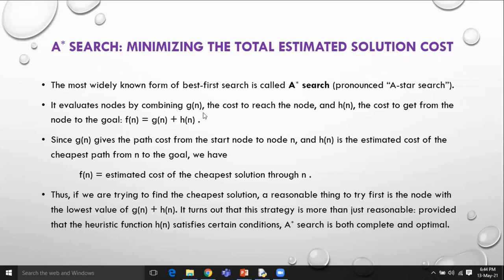It evaluates the nodes by combining g(n), the cost to reach the node, and h(n), a heuristic value — the cost to get from the node to the goal node. So the total function what we are evaluating is f = g + h. Since g is the path cost from the start node to the current node, and h is the estimated cost of the cheapest path from the current node to the goal node. So we have f equal to the estimated cost of the cheapest solution through the current node.